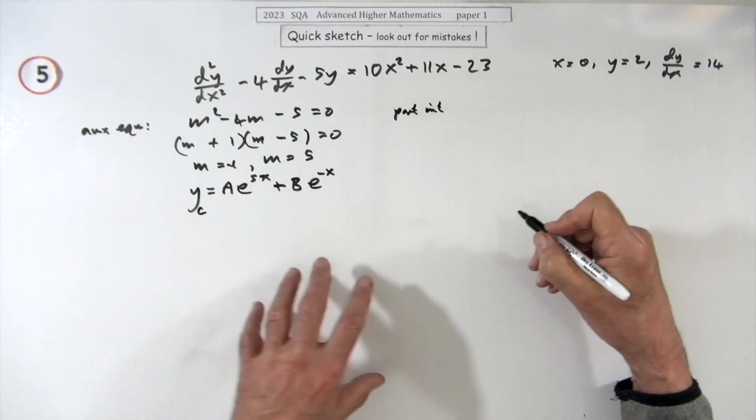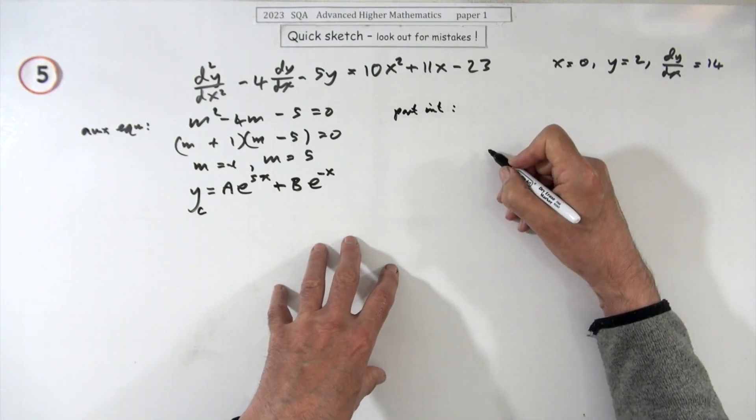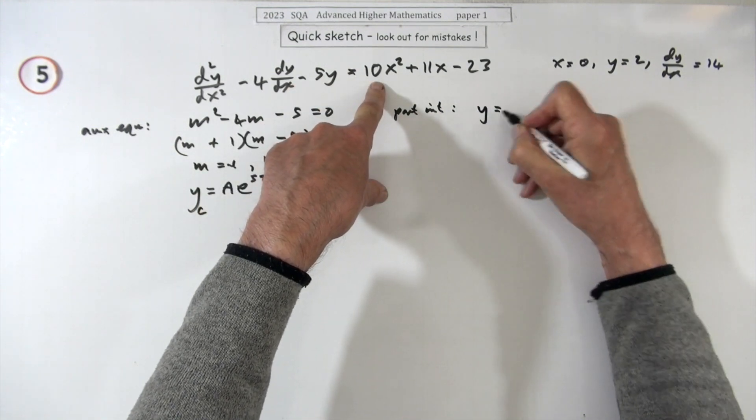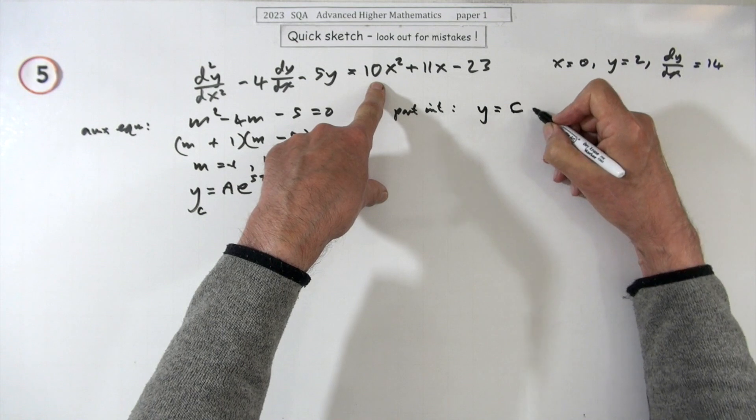Right, now about the particular integral. I'll just do it over here because I'll need tons of room. Well if differentiating this is to produce a polynomial then you're just going to start with one.